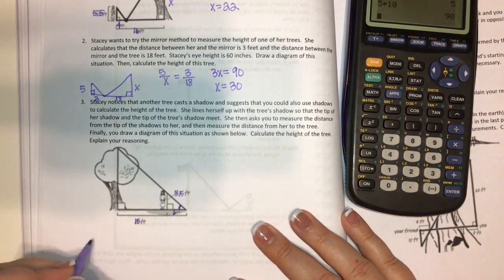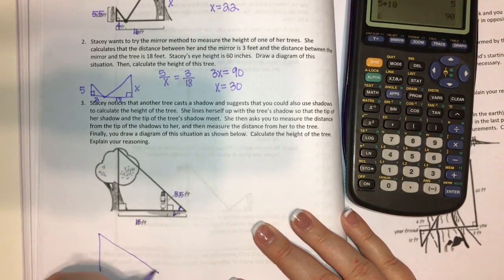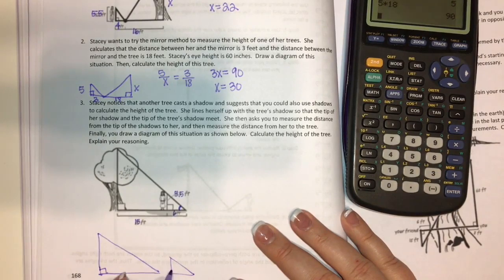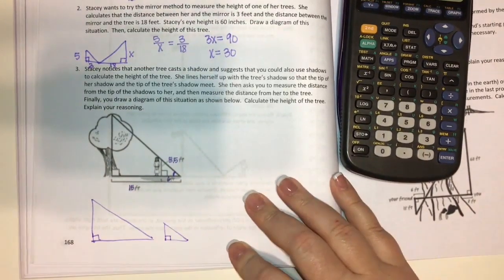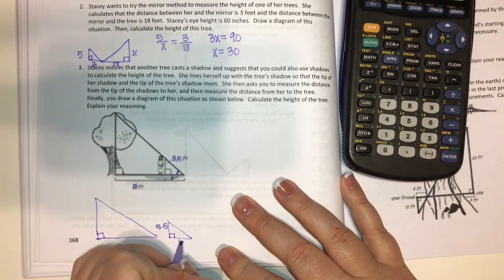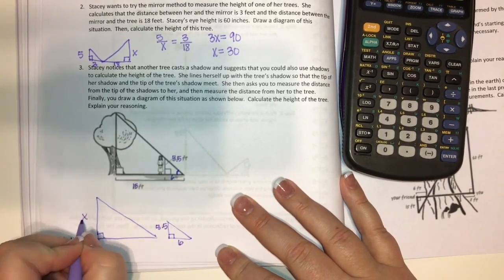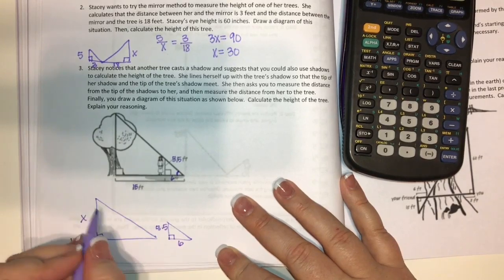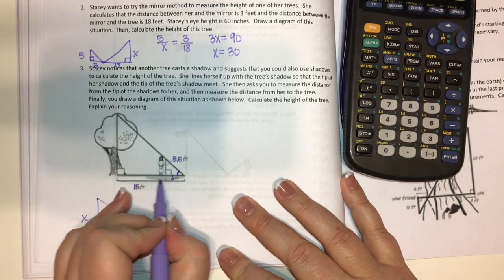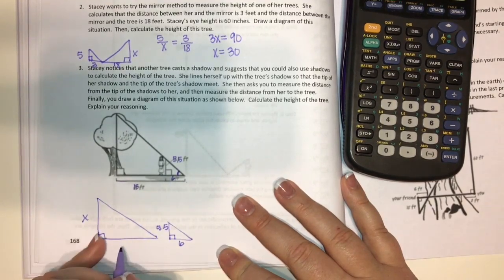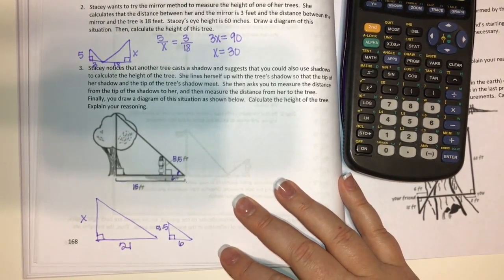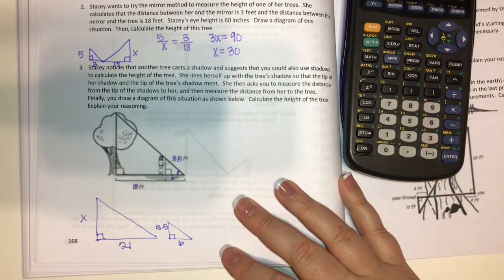So sometimes it's helpful to draw those two triangles separately. So this is 5.5. This is 6. This is X right here. And a lot of students will say this is 15. Well, this is not 15. This is going to be 15 plus 6. So that makes it 21. So make sure you're paying attention to those little details because that will get you the wrong answer if you're not.